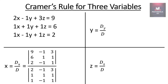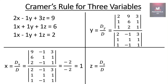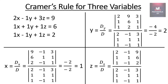The values of the determinants give us: x equals Dx by D, which is minus 2 upon minus 2, equal to 1. Y equals Dy by D, which is minus 4 upon minus 2, equal to 2. And z equals Dz by D, which on solving gives minus 6 upon minus 2, equal to 3.